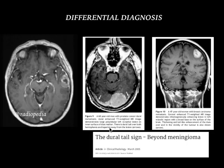So what are the differential diagnoses for this dural tail sign? Most of us think the dural tail sign is seen in meningioma alone, which is a misnomer, and many people still think it is seen only in meningioma.